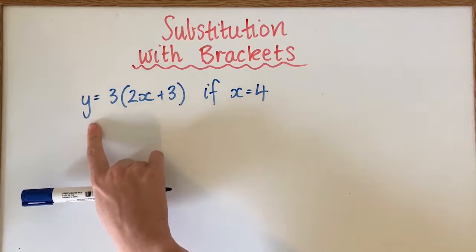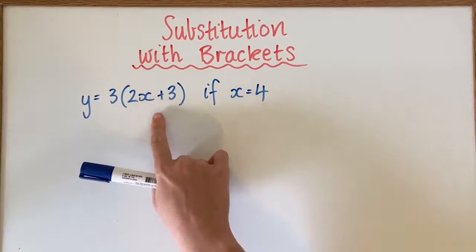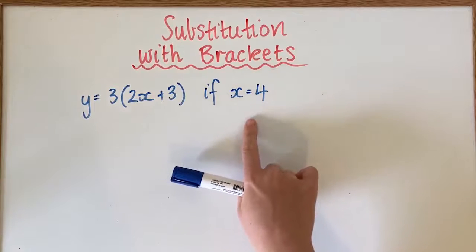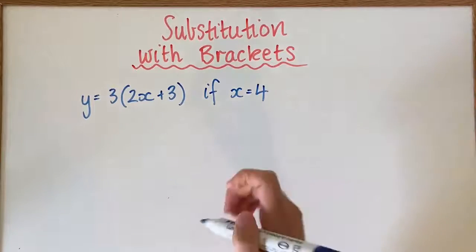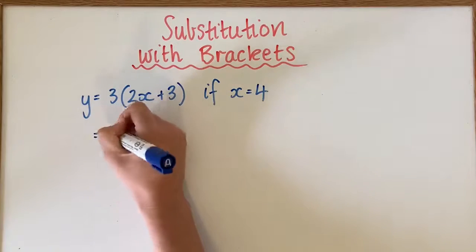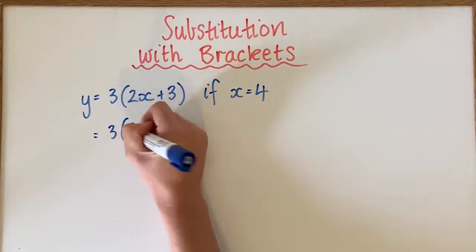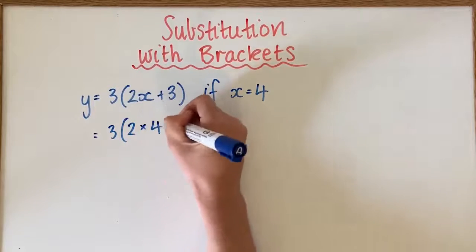So for this equation what you can see is that we've got y equals 3 bracket 2x plus 3 and it's the scenario of x equals 4. So what we need to do is we need to substitute. The first thing we're going to do is change this x to a 4.